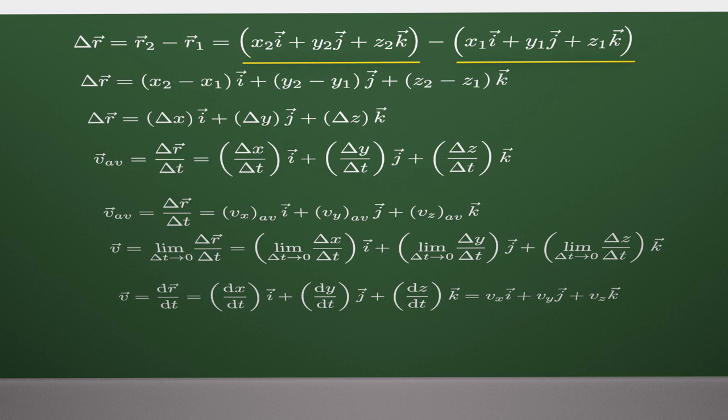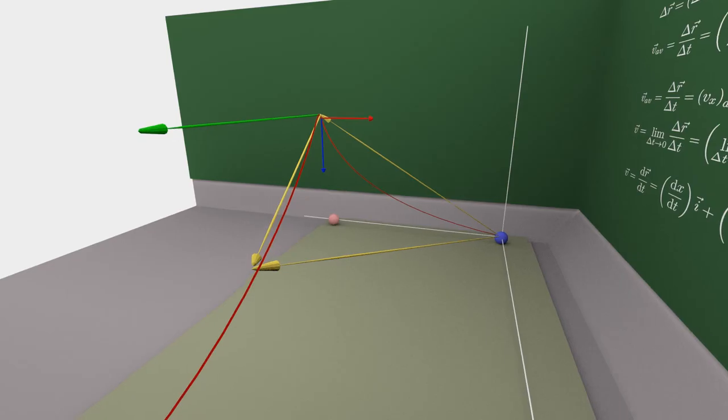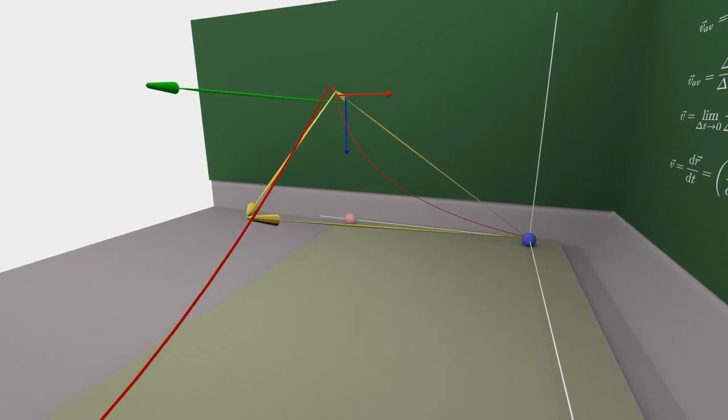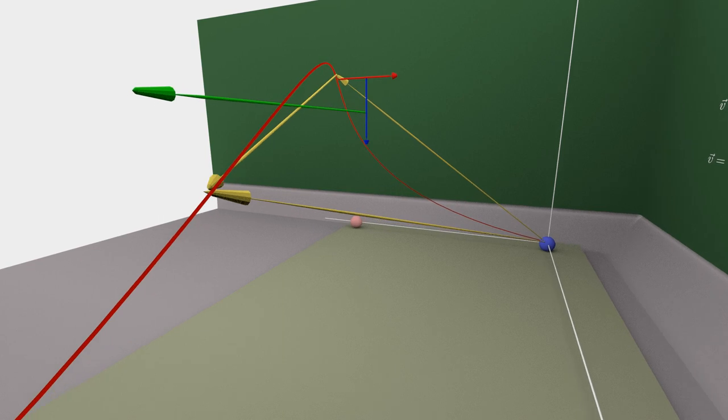It is then obvious that the displacement, delta r, can be expressed over three displacements, delta x, delta y, and delta z. Perhaps it is better from this point of view.